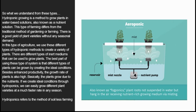Besides enhanced productivity, the growth rate of plants is also high. Basically, plants grow due to nutrients; if we create ideal conditions through hydroponics, we can easily grow different plant varieties at a much faster rate in any season.